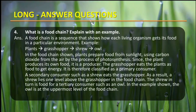Plants form the base of the food chain because they produce food using resources like sunlight and carbon dioxide through photosynthesis. Plants become food for animals like grasshoppers, which form primary consumers. Then come secondary consumers, which are dependent upon primary consumers, and then tertiary consumers, who are at the tip of the food chain.